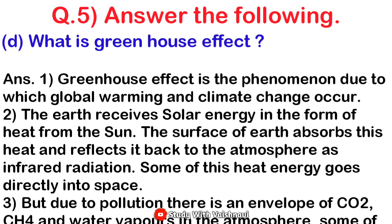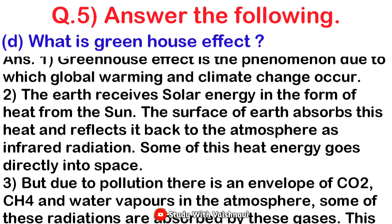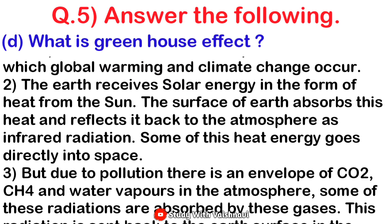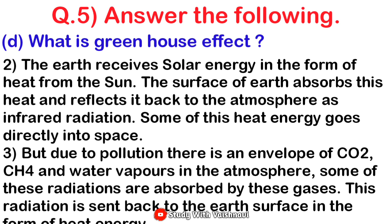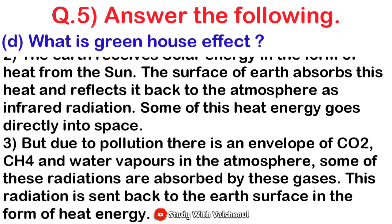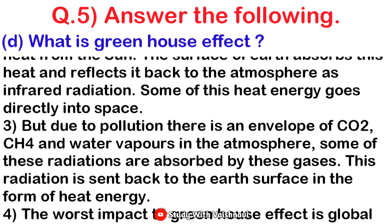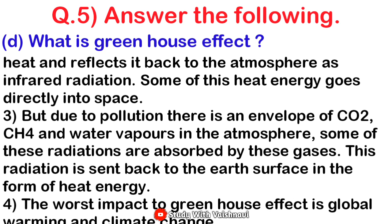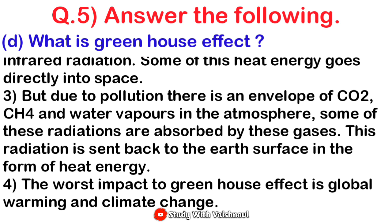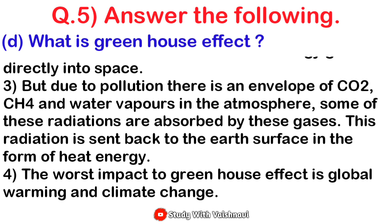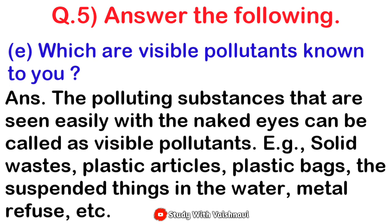Next: what is the greenhouse effect? Write in points. First: greenhouse effect is the phenomenon due to which global warming and climate change occur. Second: the earth receives solar energy in the form of heat from the sun; the surface of the earth absorbs this heat and reflects it back into the atmosphere as infrared radiation; some of this heat energy goes directly into space. Third: due to pollution there is an excess of CO₂, CH₄, and water vapors in the atmosphere — some of the radiation is absorbed by these gases and reflected back to the earth's surface as heat energy. Fourth: the resultant impact of the greenhouse effect is global warming and climate change.